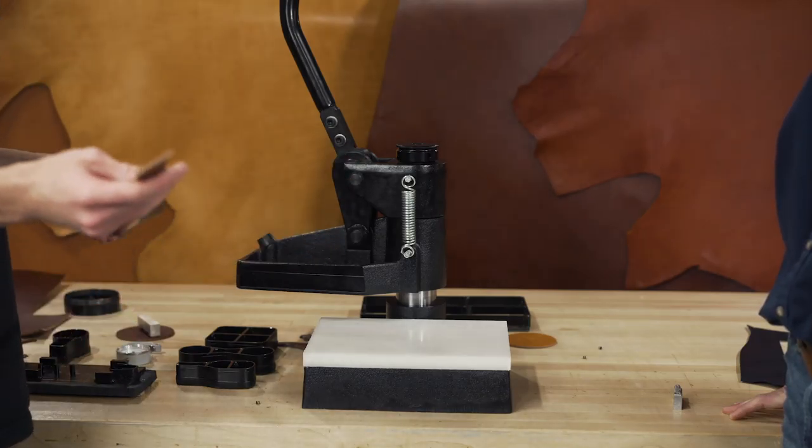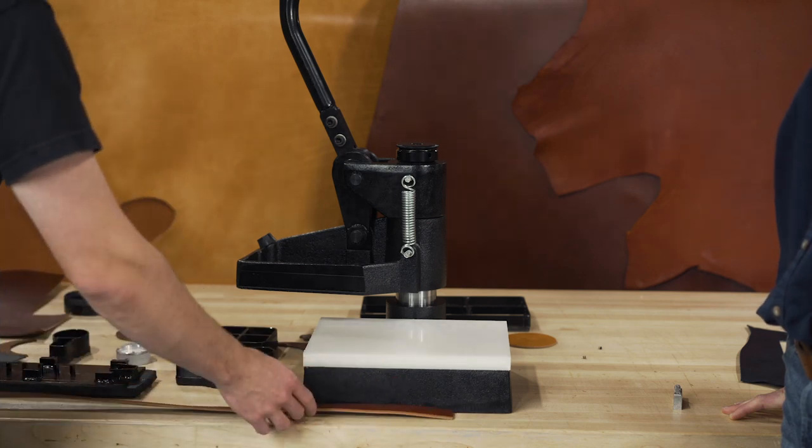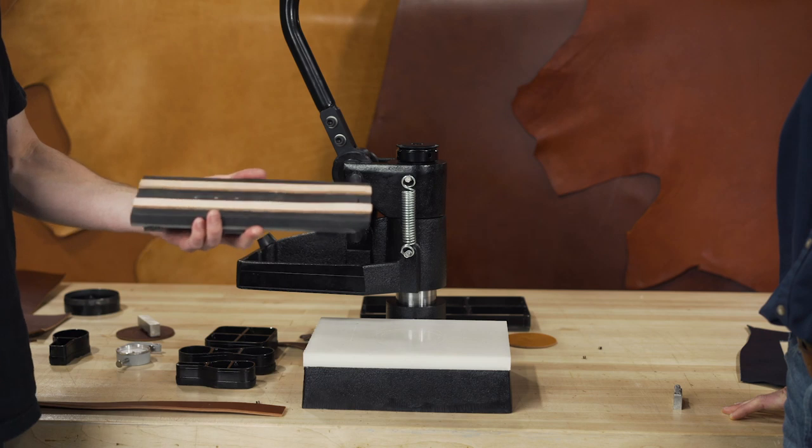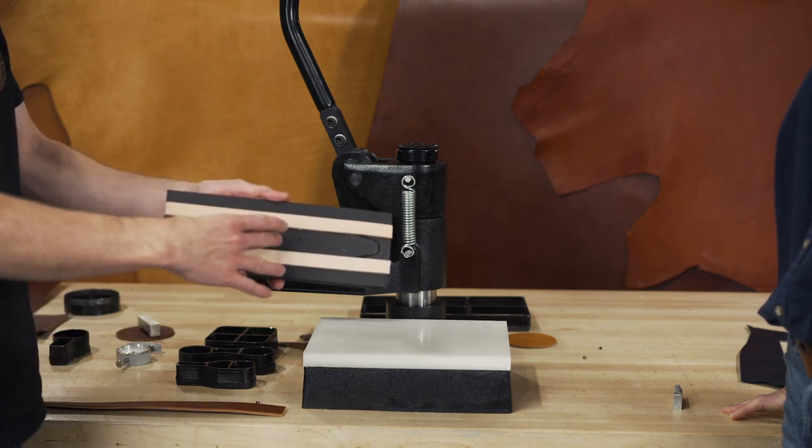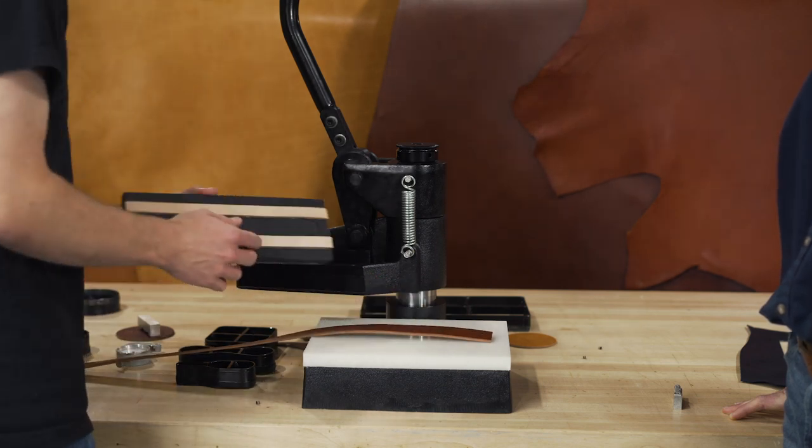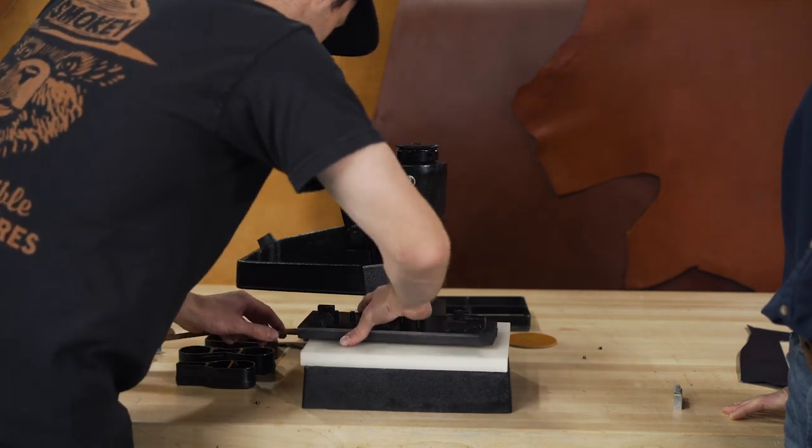Another awesome thing you can do with this machine is click out belts. You'll take your belt straps—this one's obviously a little too short. You can get a belt die for the tip end and the back end. You'll place your strap on the clicking surface. This has two guides right here. You're going to place it right in the center of the die or in the center of the guides.